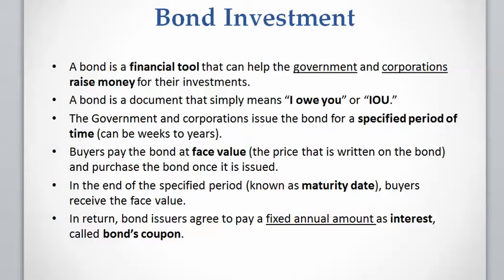A bond is a piece of document that simply says 'I owe you.' There are three things that you need to know about the bond. The first one is the face value. When buyers buy a bond they pay the face value, which is the amount that is written on the bond at the time it is issued.